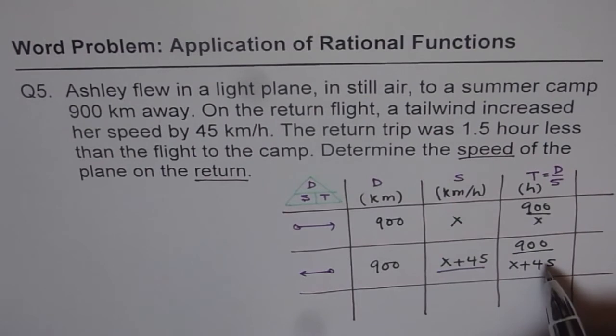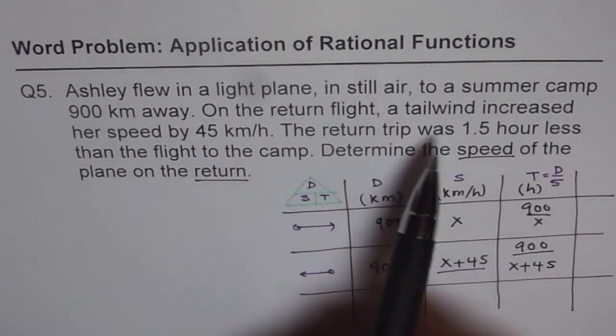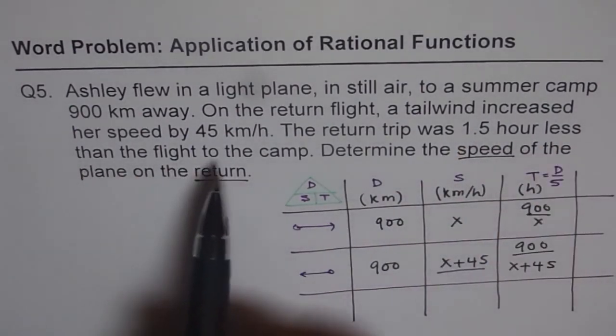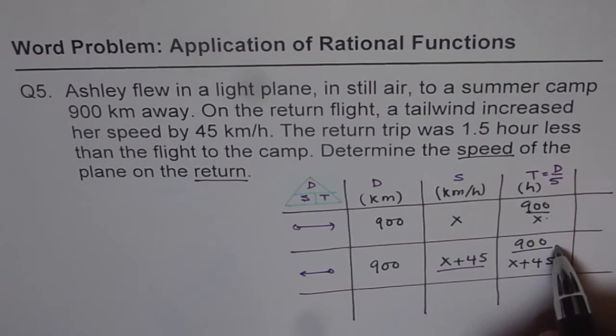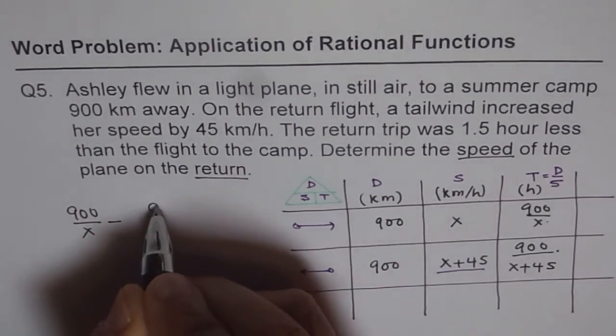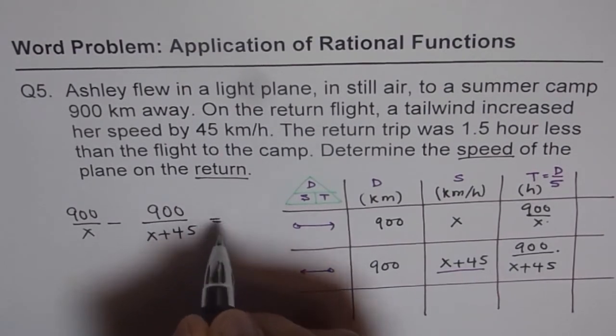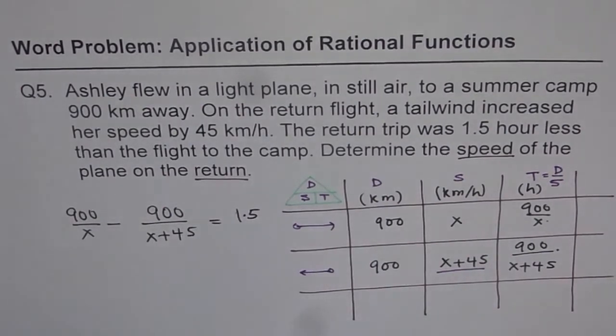Now to get the equation, let's read the equation once again. And that statement, the return trip was 1.5 hours less than the flight to the camp. So return trip was faster, it took lesser time. That means the difference of these two is 1.5, and that is the equation. So we write 900 over x minus 900 over x plus 45 equals 1.5. So that is how you get to the equation.